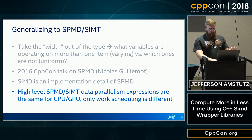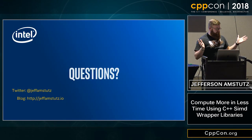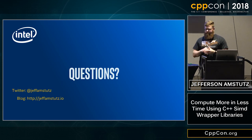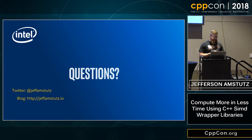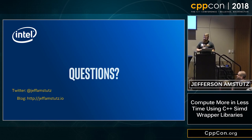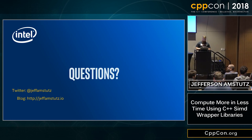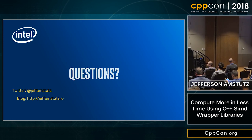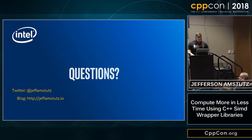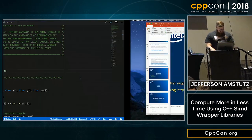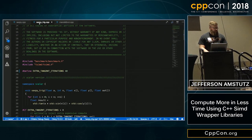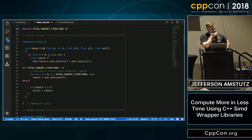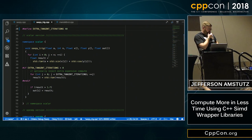Questions from the audience. First question: what are best practices when the array size is not a multiple of the SIMD register width? For example, if you have five values but an eight-wide register?